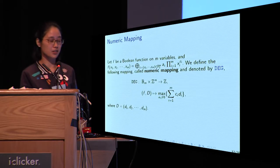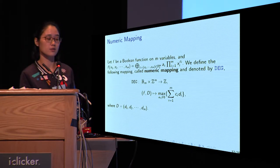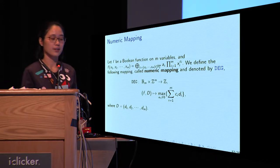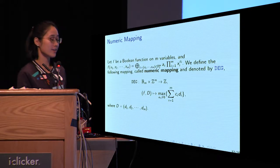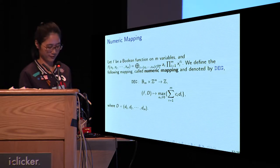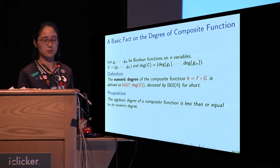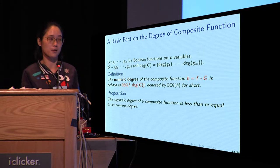First, let's see the definition of numeric mapping. Let f be a Boolean function on m variables. The numeric mapping maps the Boolean function f and m integers to one integer, denoted by capital DIG. Here, a_c are the coefficients of the algebraic normal form of the Boolean function f. The numeric degree of a composite function is defined accordingly, and we can prove that the algebraic degree of a composite function is less than or equal to its numeric degree.